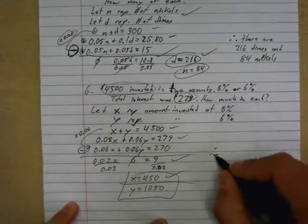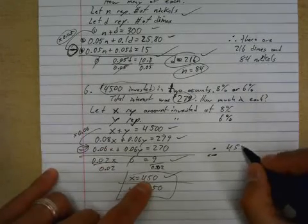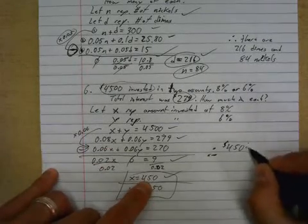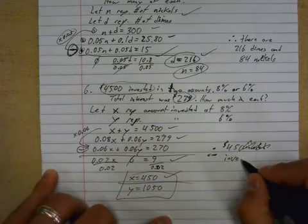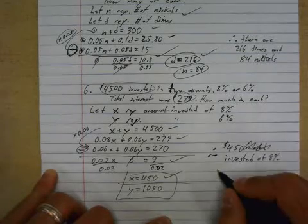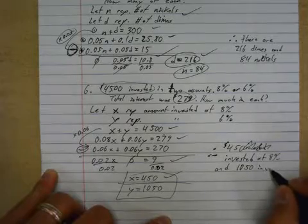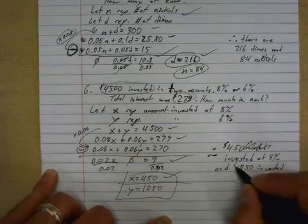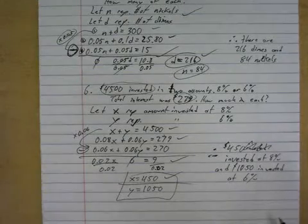Therefore x is 450, so $450 invested at 8% and $1050 invested at 6%. Done.